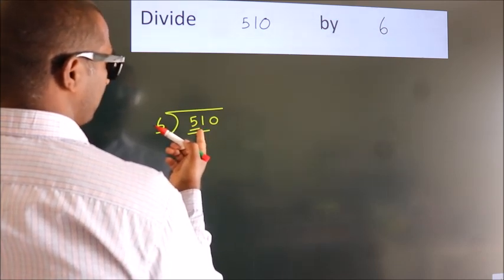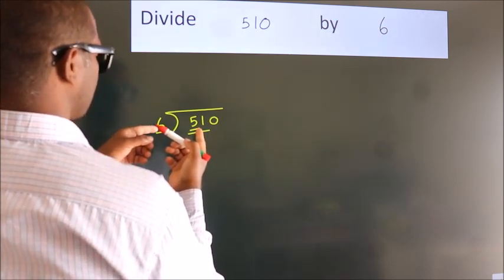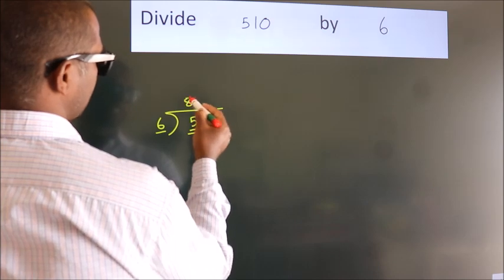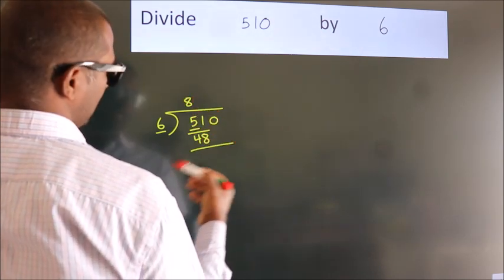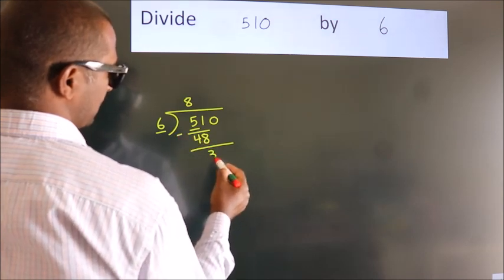A number close to 51 in the 6 table is 6 times 8, which is 48. Now we should subtract. We get 3.